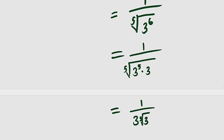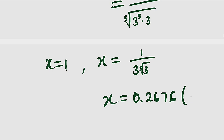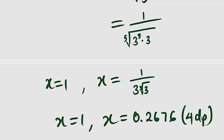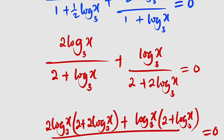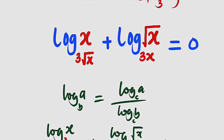You can rationalize the denominator if you like, but it is not necessary. So the two solutions are x = 1 or x = 1/(3·⁵√3), which is approximately 0.2676 to four decimal places. As an assignment, test whether these values satisfy the original equation. Thank you for watching — share with your colleagues and subscribe to the channel for more exciting videos.